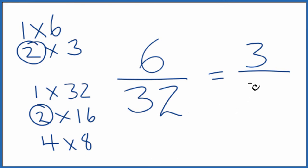We can't reduce this any further. There's no common factor other than 1 for 3 and 16, so we've reduced 6/32 down to 3/16. These are equivalent fractions. 6 divided by 32, 3 divided by 16, they give you the same number.